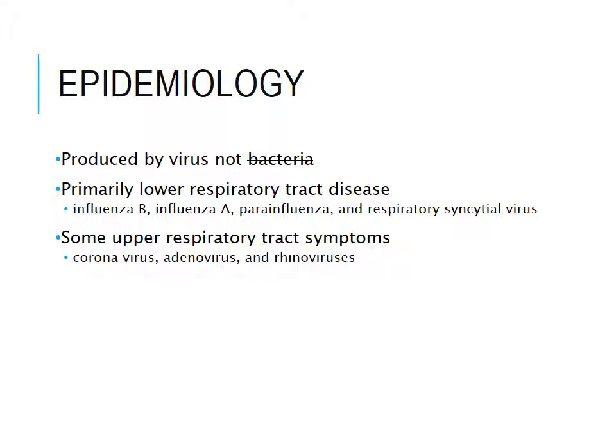Specific viruses associated with acute bronchitis include those that produce primary lower respiratory tract infections, such as influenza A and B, parainfluenza, and RSV, as well as viruses that more commonly produce upper respiratory tract symptoms, such as rhinovirus, adenovirus, and coronavirus.